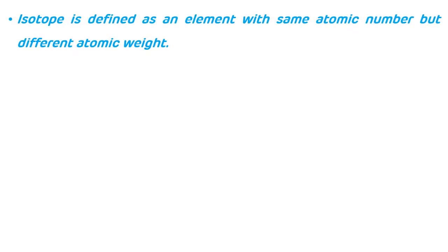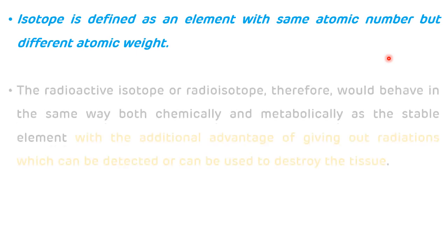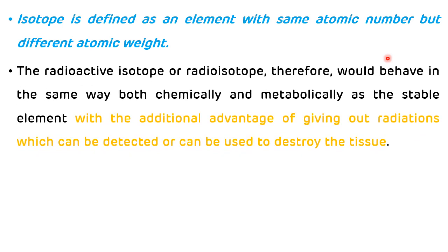Isotope is defined as an element with same atomic number but different atomic weight. A radioactive isotope or radioisotope would behave in the same way both chemically and metabolically as the stable element, with the additional advantage of giving out radiations which can be detected or used to destroy tissue.